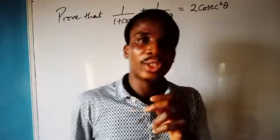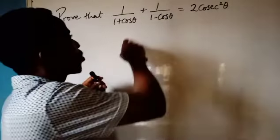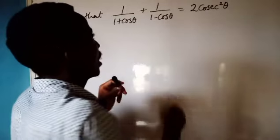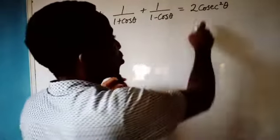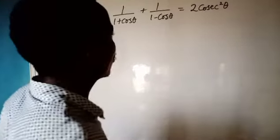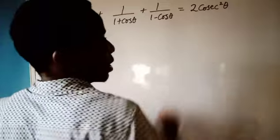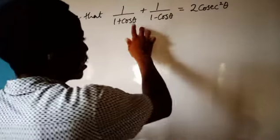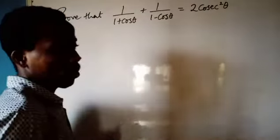Hello friends, let's look at how to solve this. It says prove that 1 over (1 plus cos theta) plus 1 over (1 minus cos theta) is equal to 2 cos squared theta. So how do we show that this left hand side is equal to this right hand side? I want to verify that this left hand side equals this right hand side.